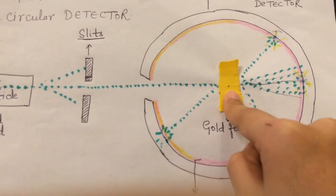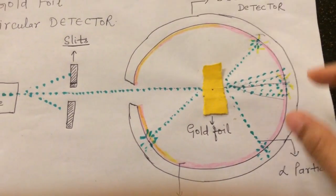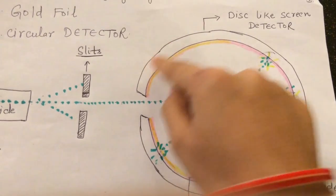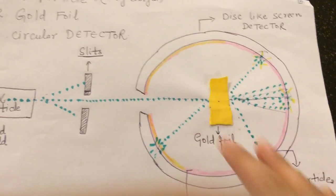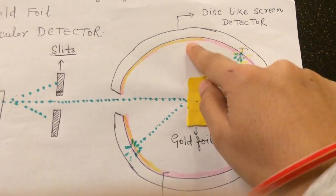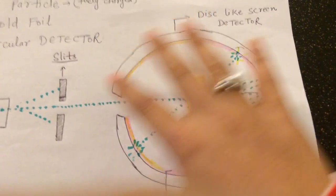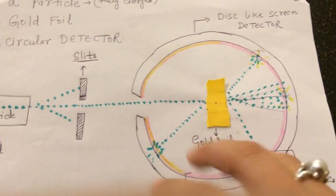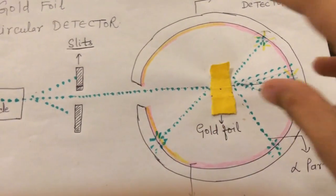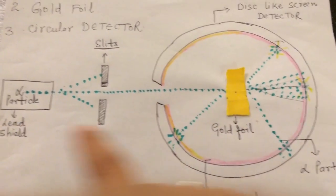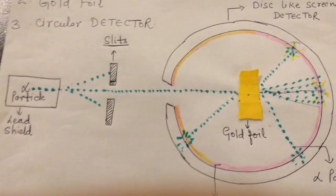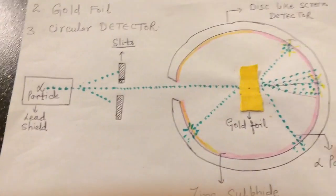Once the streamlined alpha particles pass through the slits and strike the thin gold foil, different areas on the circular detector start glowing. These glowing areas indicate where the alpha particles end up after striking the gold foil. Now let me explain the observations using a zoomed-in diagram of a gold atom.